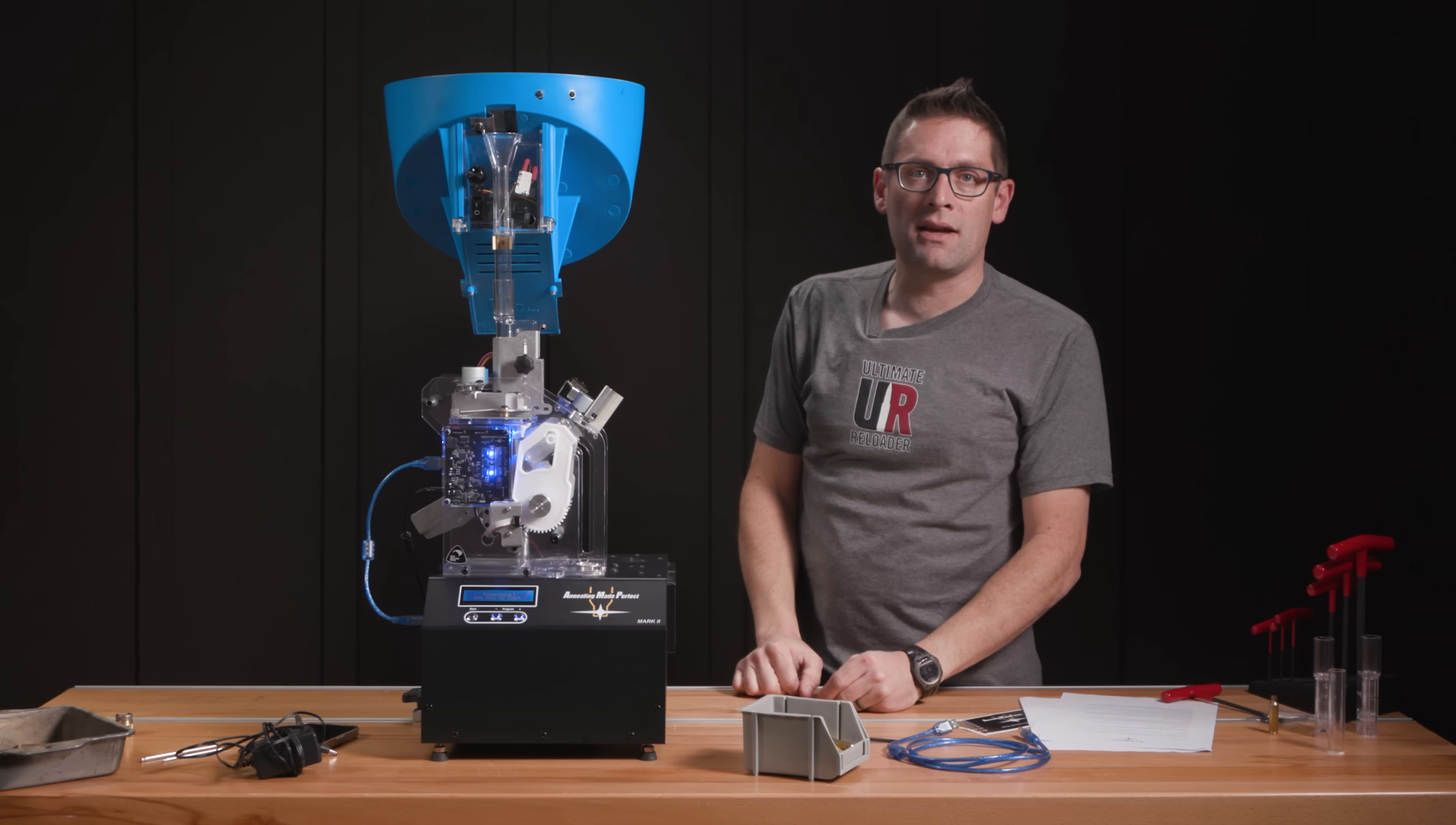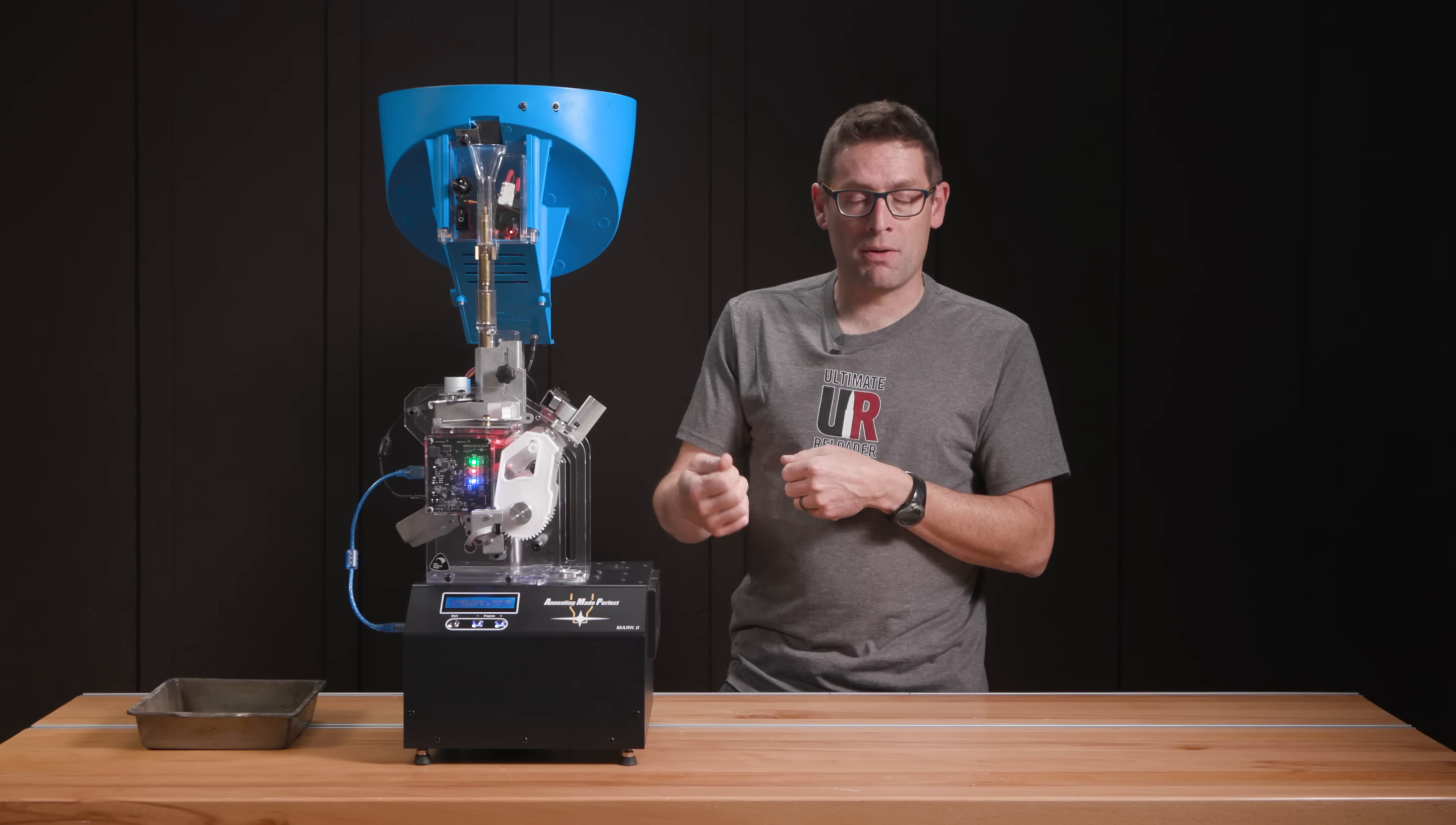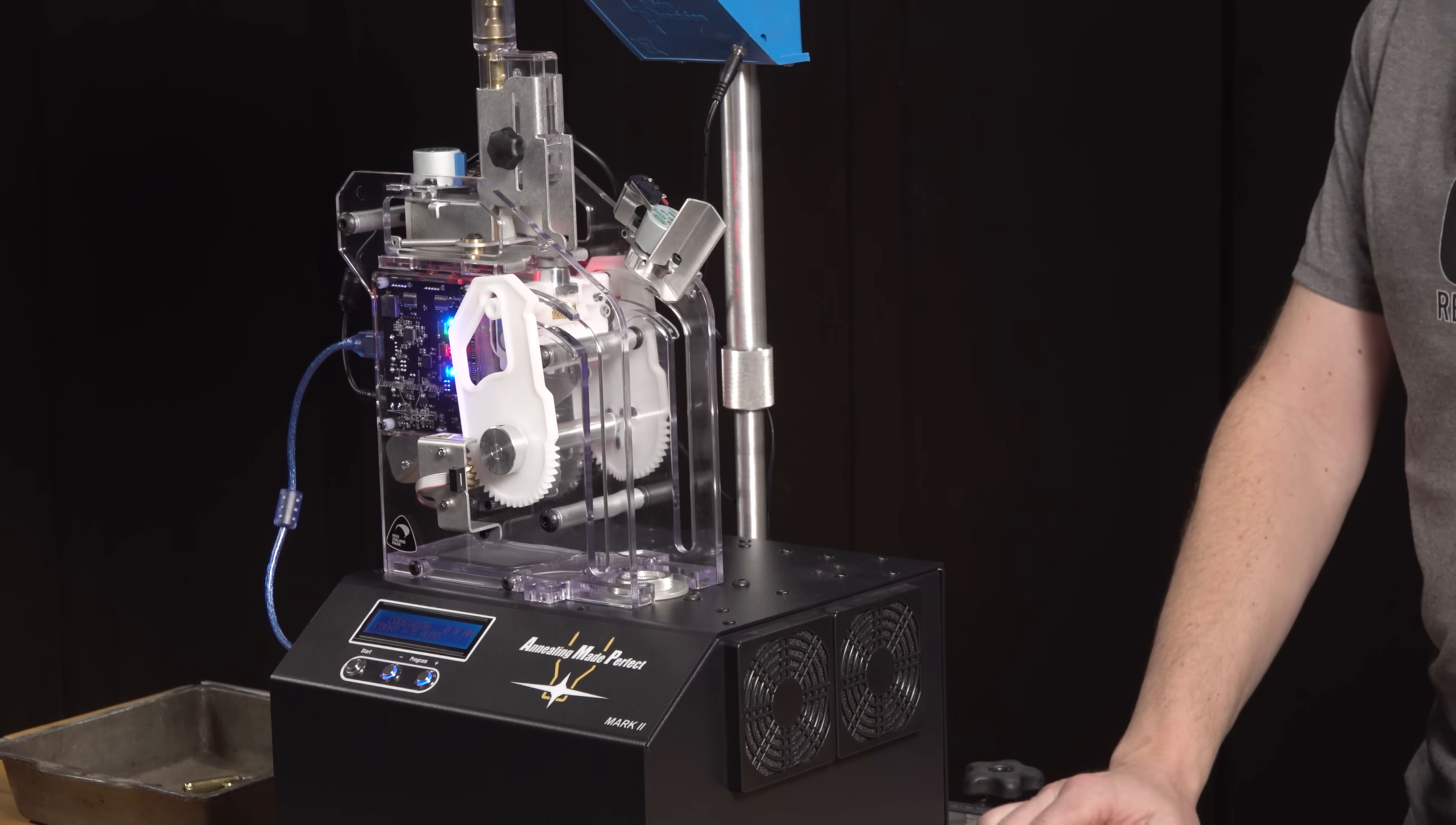So here we are. I've cleaned up the bench a little bit. We had set up the case feeder. One thing that we noticed in our preliminary gauging of the cases in the case feeder was that we were getting some sticking. It turned out when we looked at the primers, they were a little bit cratered from a high pressure load that was the most previous firing on this brass. So we decapped all the brass, which is a normal part of brass prep anyway. And now we're ready for the full automatic annealing.